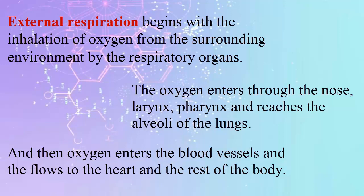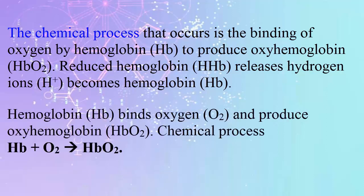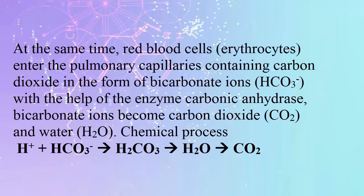The chemical process that occurs involves the binding of oxygen by hemoglobin to produce oxyhemoglobin. Reduced hemoglobin releases hydrogen ions and becomes hemoglobin again, then hemoglobin binds oxygen to produce oxyhemoglobin.